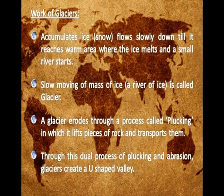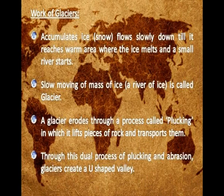Accumulated ice flows slowly down until it reaches a warm area where the ice melts and a small river starts. This slow-moving mass of ice is called a glacier. A glacier erodes through a process called plucking, in which it lifts pieces of rock and transports them. Through this dual process of plucking and abrasion, glaciers create a U-shaped valley.